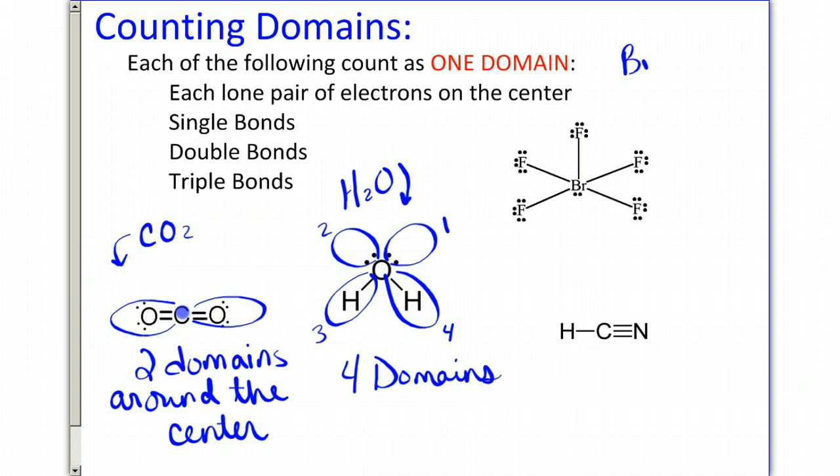Let's look at BrF5, which is here. This Lewis structure, we have one lone pair on the center, so that's my first domain. I've got a second domain, third domain, fourth domain, fifth domain, and six. This has six domains.